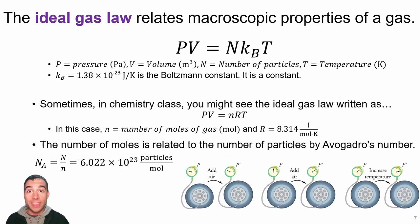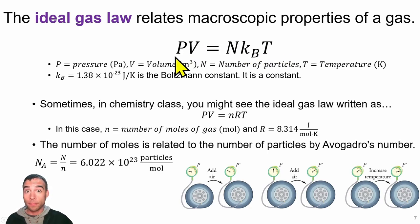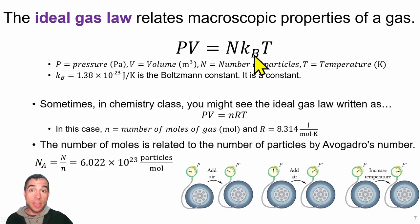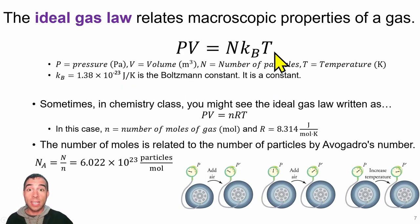We can use the ideal gas law to relate all these properties. In physics class, the ideal gas law says PV = NkT, where P is pressure, V is volume, N is the number of particles, k_B is the Boltzmann constant (1.38 × 10⁻²³ joules per Kelvin), and T is the temperature of the system measured in Kelvin.